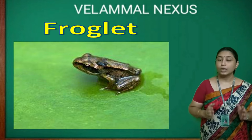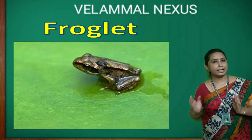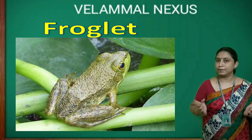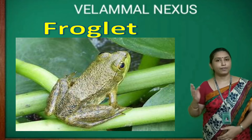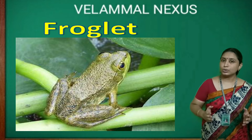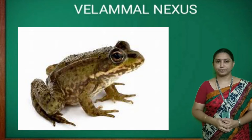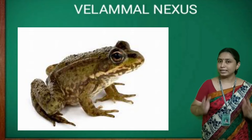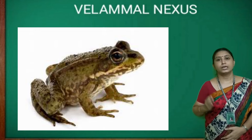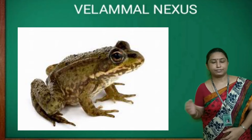A froglet looks similar to an adult frog. It has well-developed legs for hopping and walking. It also develops lungs for breathing air. In the final stage of development, the froglet develops into an adult frog.